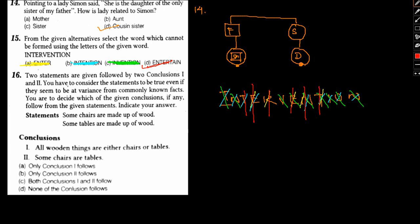Now, let's move to the last question, question number 16. Two statements are given followed by two conclusions, one and two. You have to consider the statements to be true even if they seem to be at variance from commonly known facts. You are to decide which of the given conclusions, if any, follow. Some chairs are made of wood. We have chairs here. Some of the chairs are made of wood. Some tables are made of wood. Again, some tables are there, they are also made of wood.